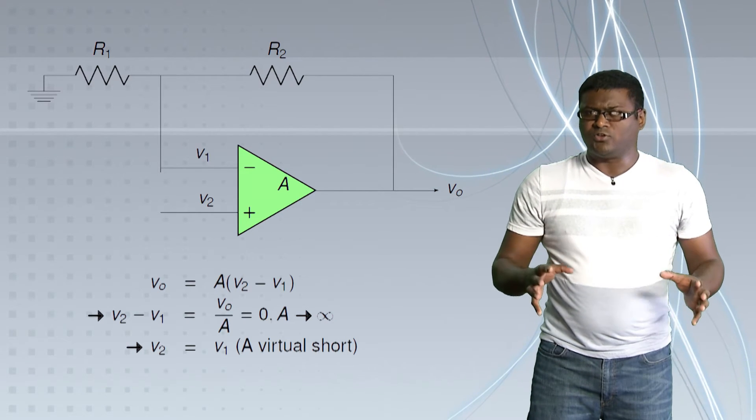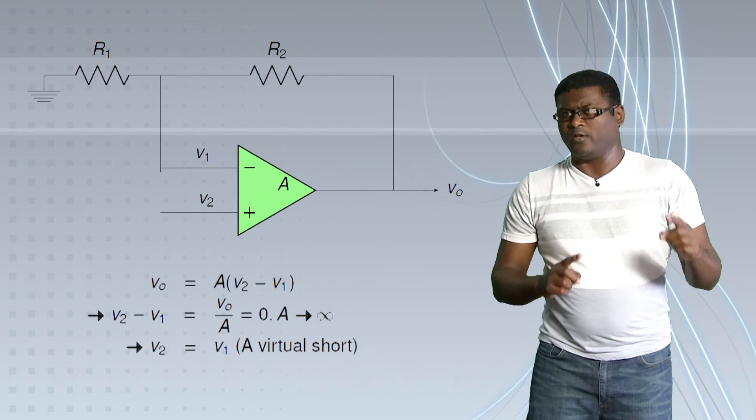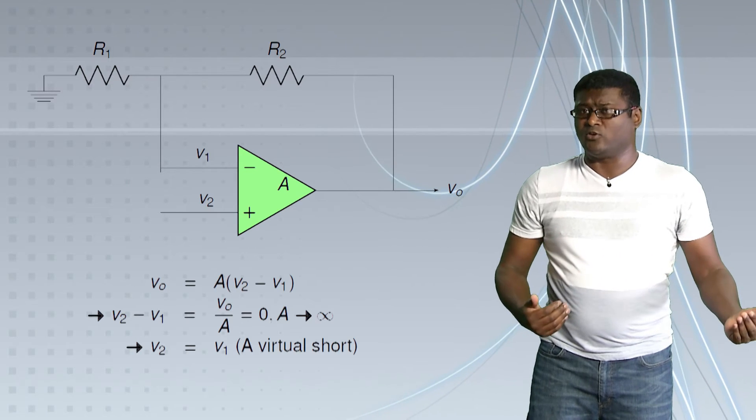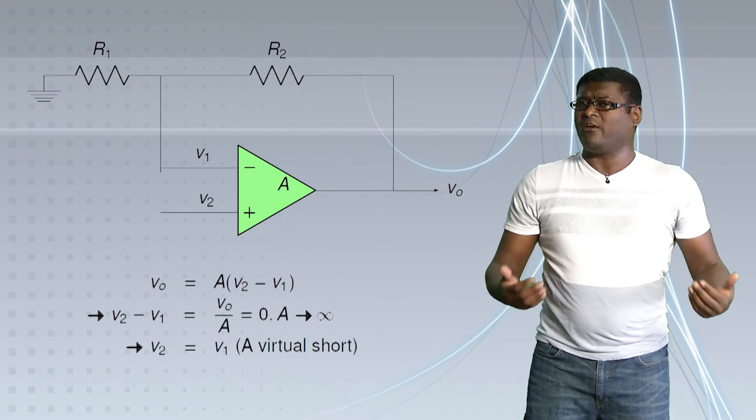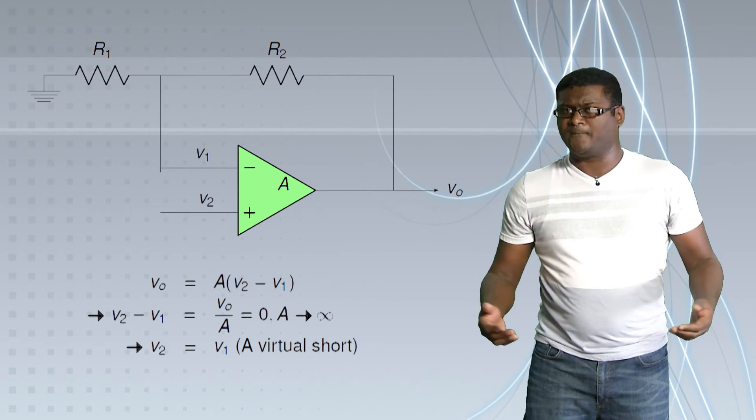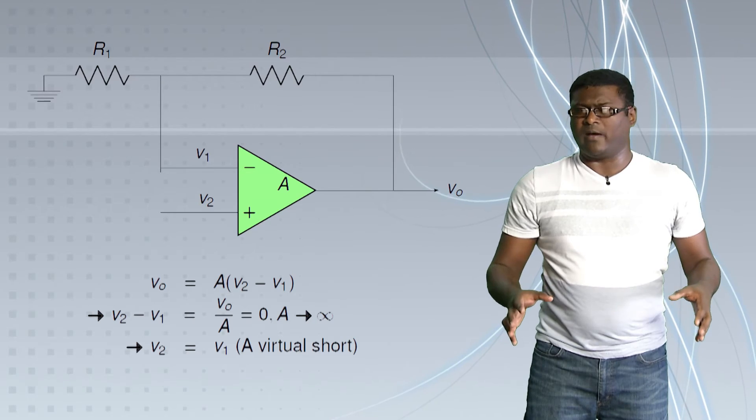Now, I say it's a virtual short because the potentials at the inverting and the non-inverting pins are always equal, but there is no actual current flowing through them. So, they behave as if there's a short between them, but there's actually no such thing as a short. Now, let's put back all the properties of an ideal op-amp that we saw.